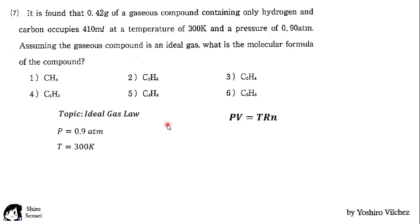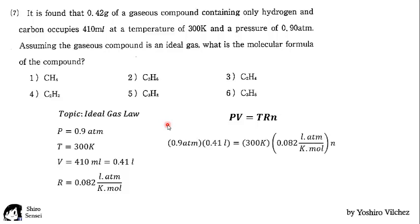Since the problem gives us the values of pressure, temperature, volume and R, we will be able to calculate n, the number of moles. We cancel out units and simplify and finally we get that the number of moles is 1.5 multiplied by 10 to the minus 2 moles.